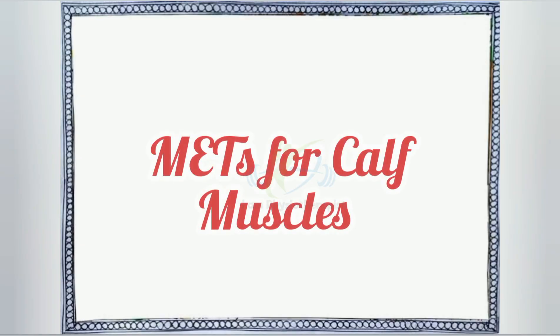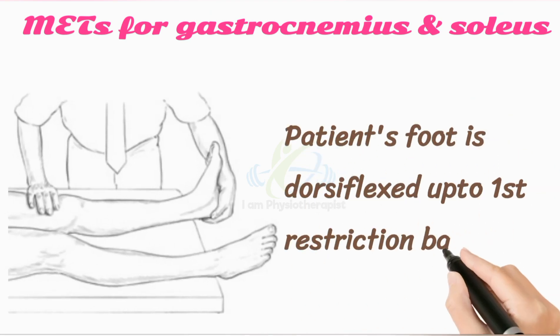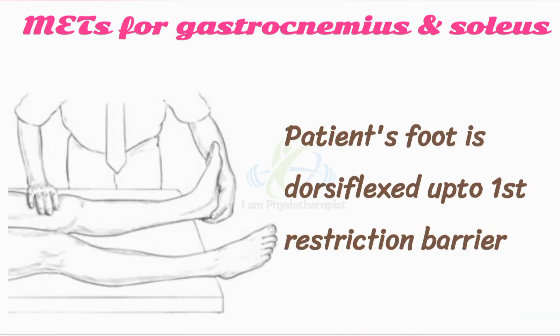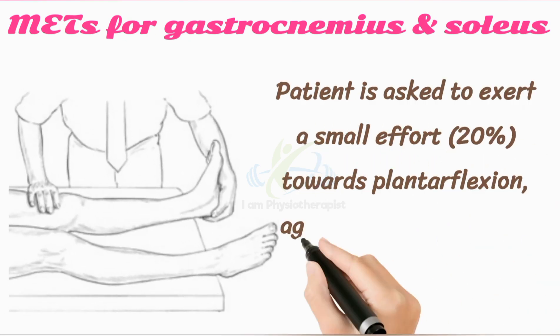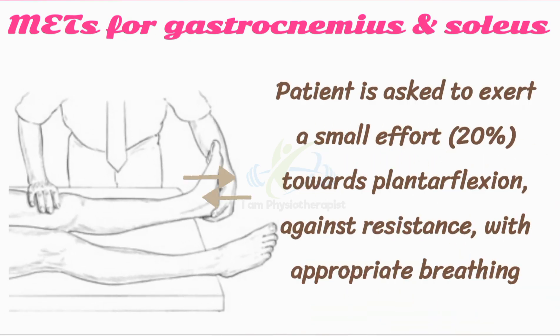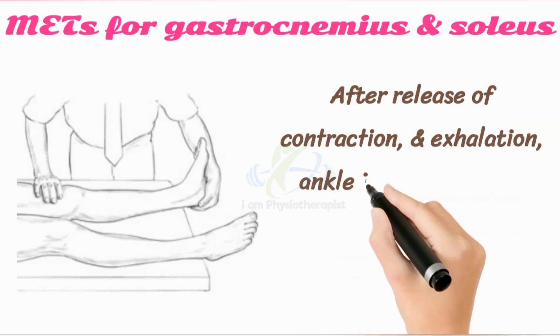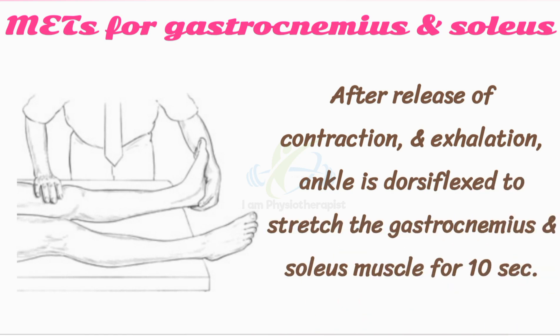Muscle energy technique for the gastrocnemius and soleus: the patient's foot is dorsiflexed up to the first restriction barrier. At the restriction barrier, the patient is asked to exert a small effort of no more than 20% of available strength towards plantar flexion, against unyielding resistance, with appropriate breathing. This contraction is held for 5–7 seconds along with breath hold. On slow release of contraction and on exhalation, the foot or ankle is dorsiflexed to stretch the gastrocnemius and soleus muscle for 10 seconds.